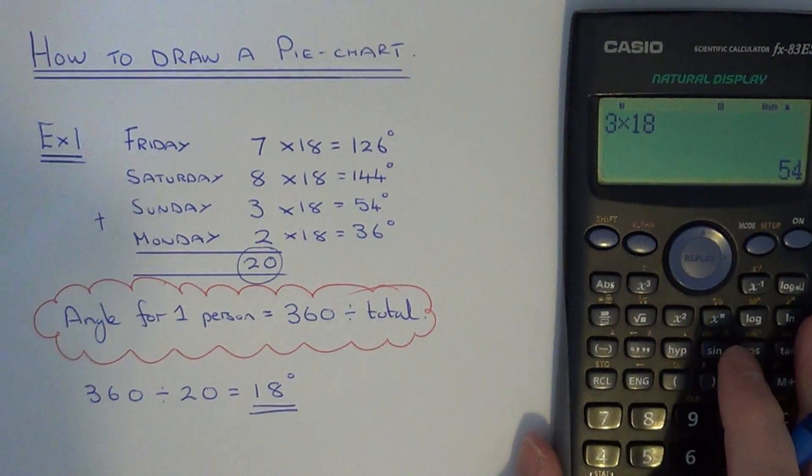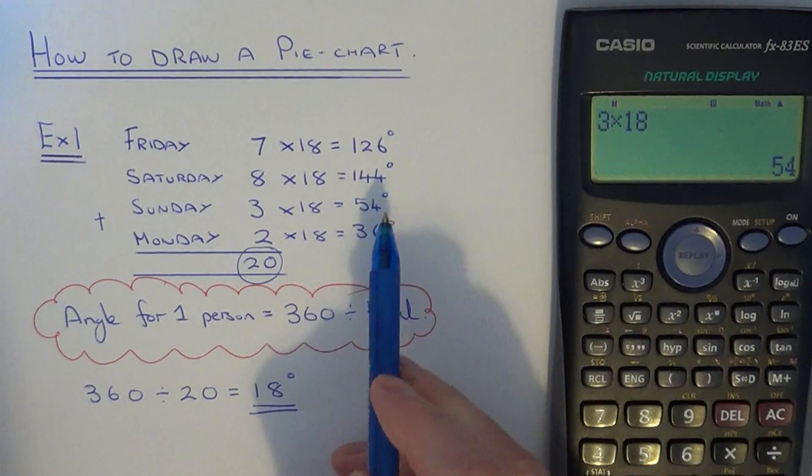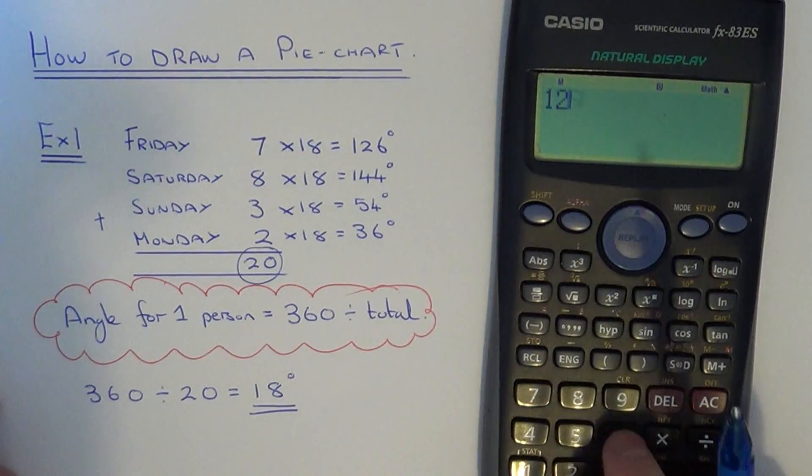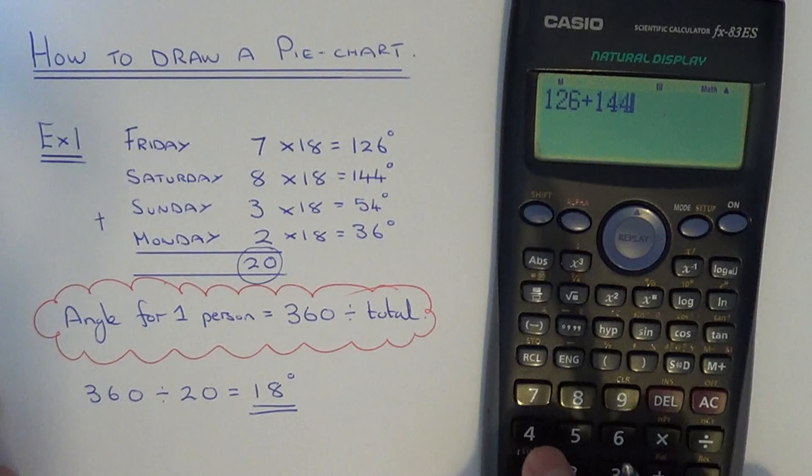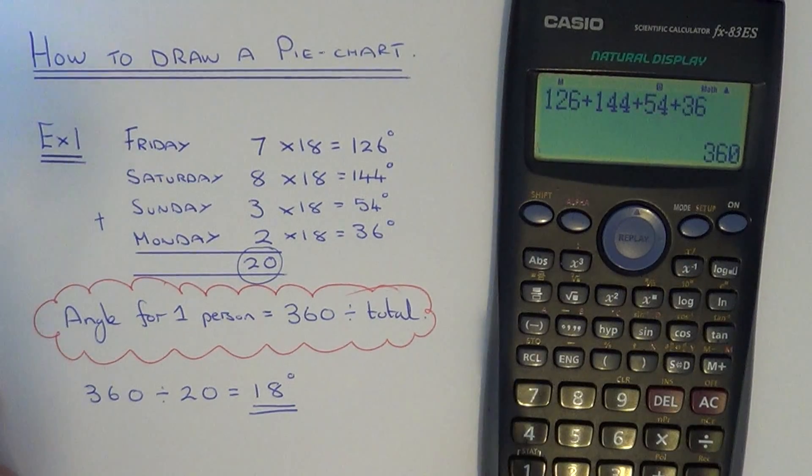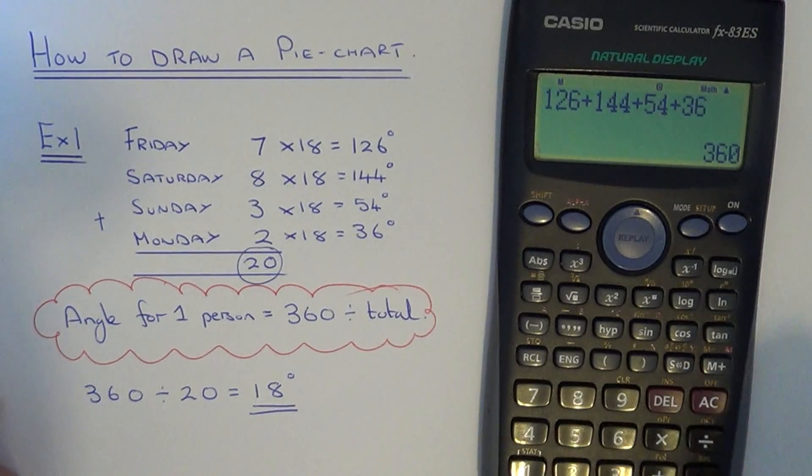Now before you actually draw out the pie chart, just check that these angles add up to 360 degrees, because it's 360 degrees in a full circle. There we go, so you can see that they add up to 360.